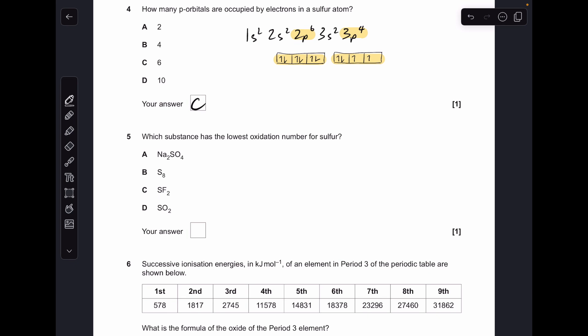Number five, we'll quickly work out the oxidation numbers for the sulfurs in all of these. For A it's plus six, for B it's zero so it's an element, for C it's plus two, and for D it's plus four. So you can see B is the answer.